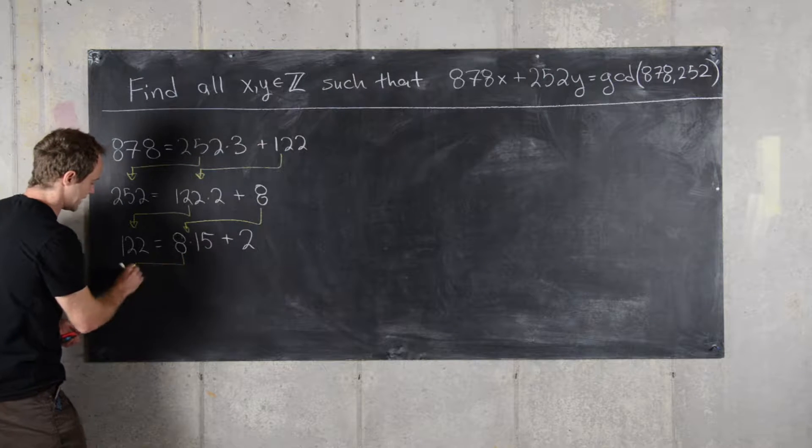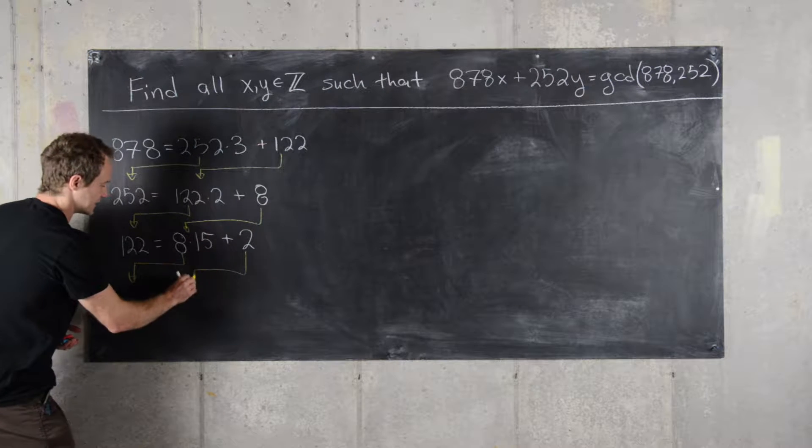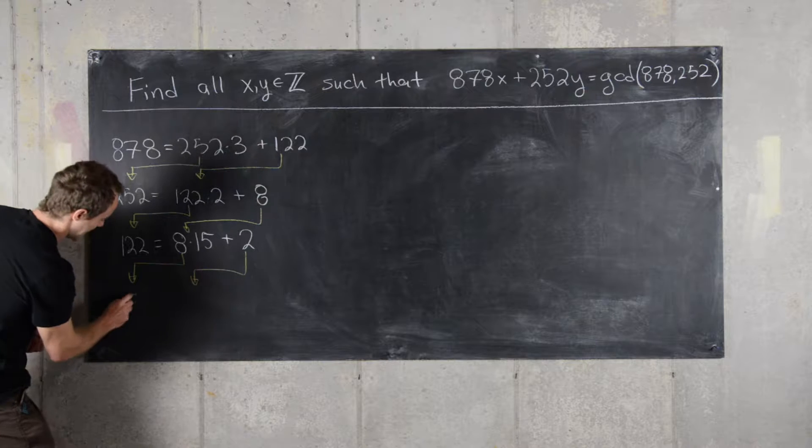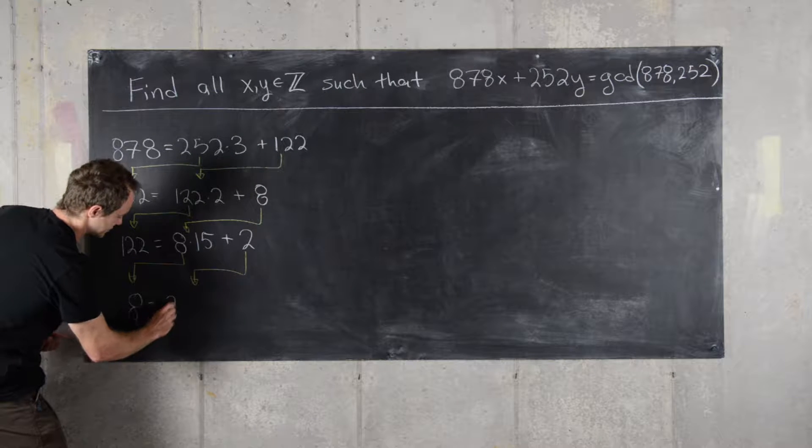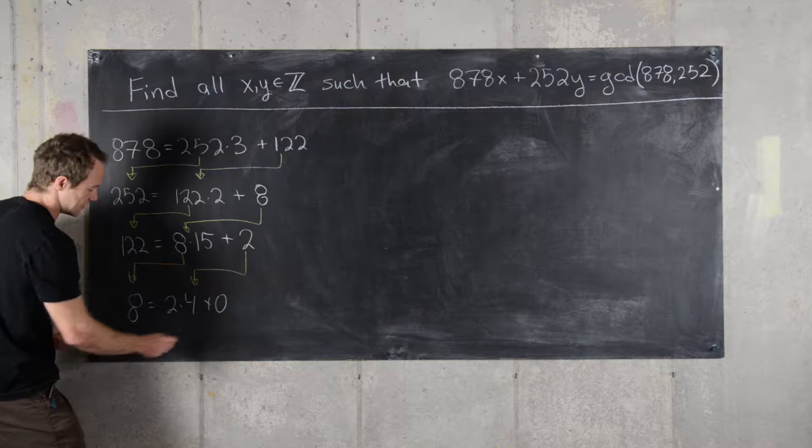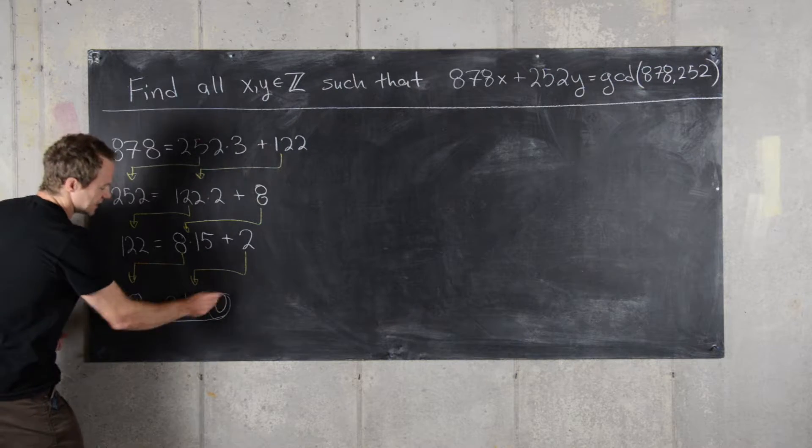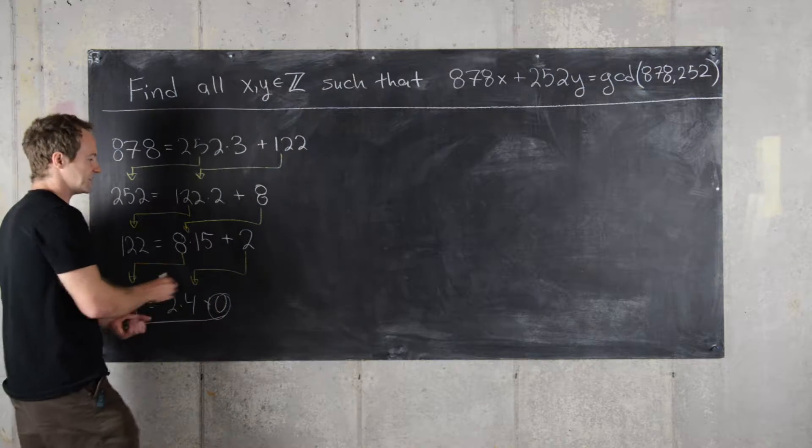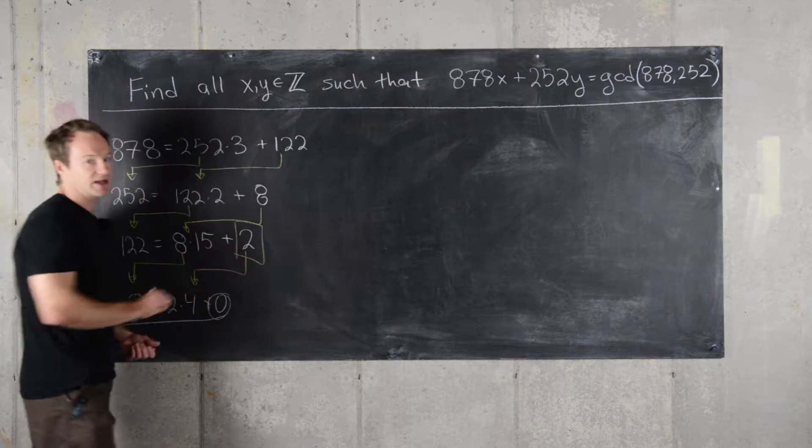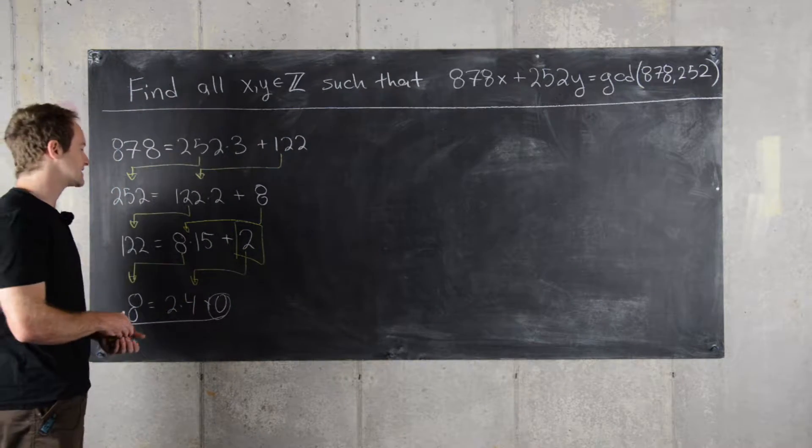Now we'll bring down 8 and 2. We can see that 8 equals 2 times 4 plus 0. Since this is a remainder of 0, it means that the GCD is the last non-zero remainder. So the GCD in this case is 2.